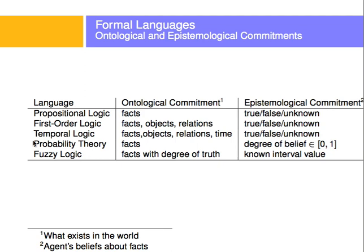There are other ways of representing language. Most interestingly, in probability theory or fuzzy logic, there are facts sometimes with a degree of truth — so there is a probability of a fact being true and a probability of it being wrong, and sometimes there's a degree of belief on the part of the agent. These are the subject of probabilistic and fuzzy logic.